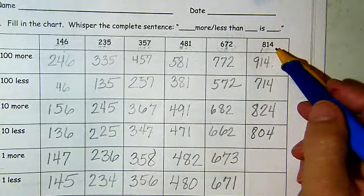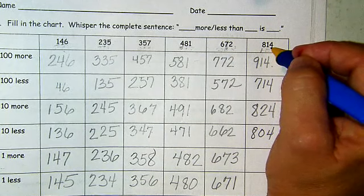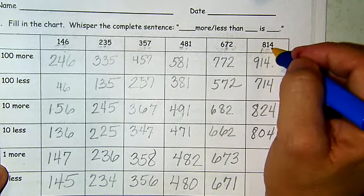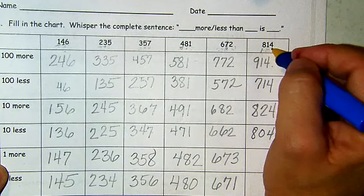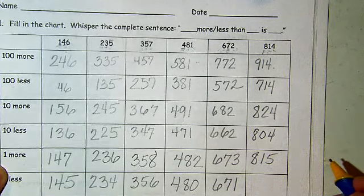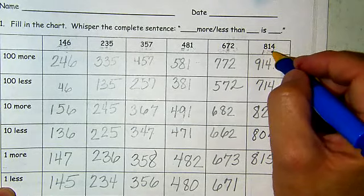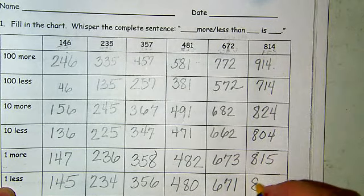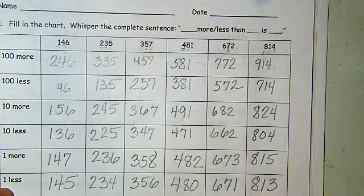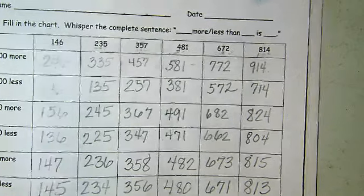Last one. We have 814 and four is the digit in the ones place. So one more than 814 would make this a five and we would have 815. One less than 814 — take one away — you would have a three: 813. That is a lot of numbers. If you need to pause a second to catch up, that's fine. I'm going to move on to the bottom of the page.